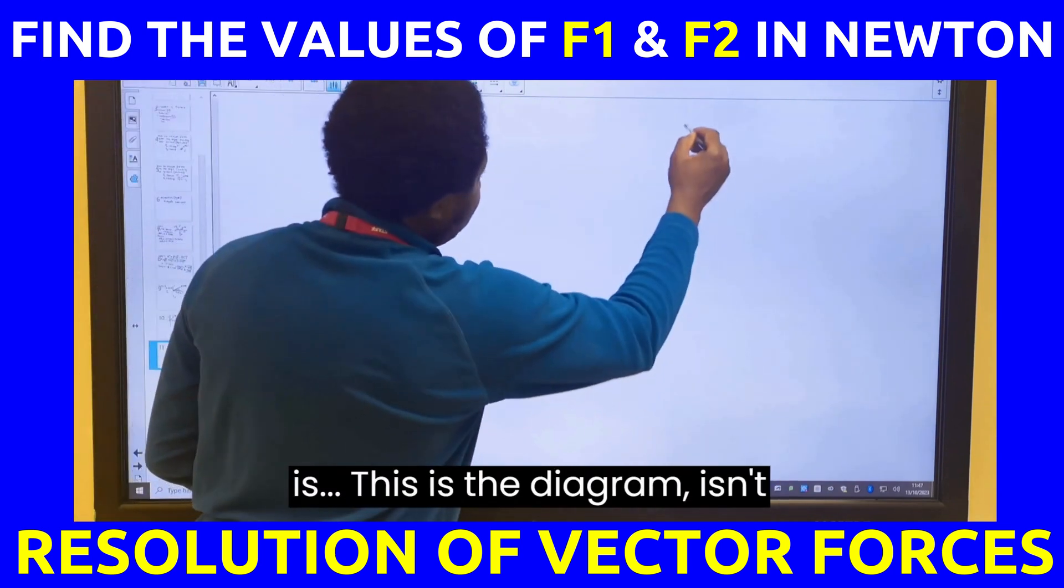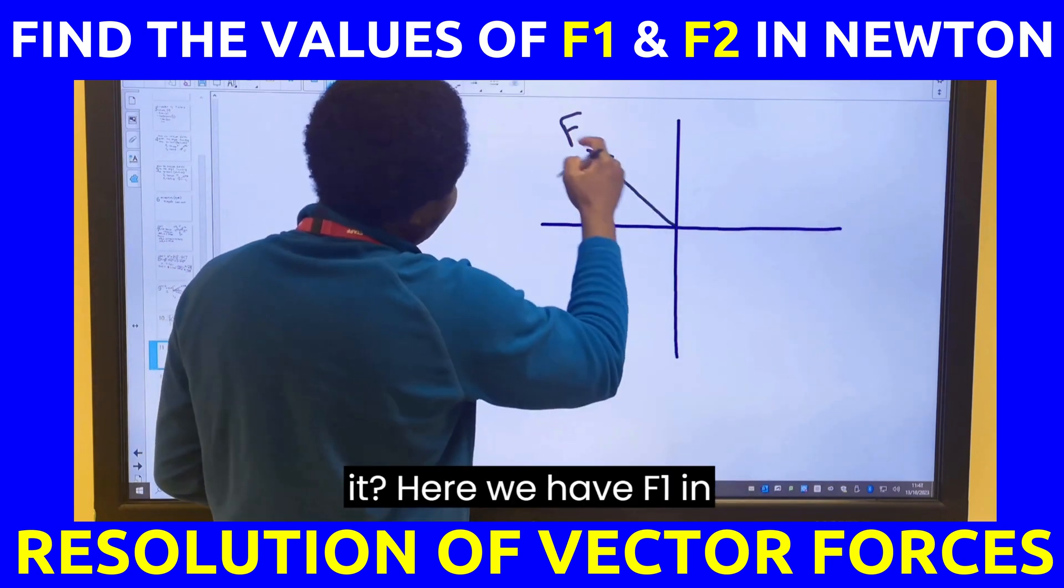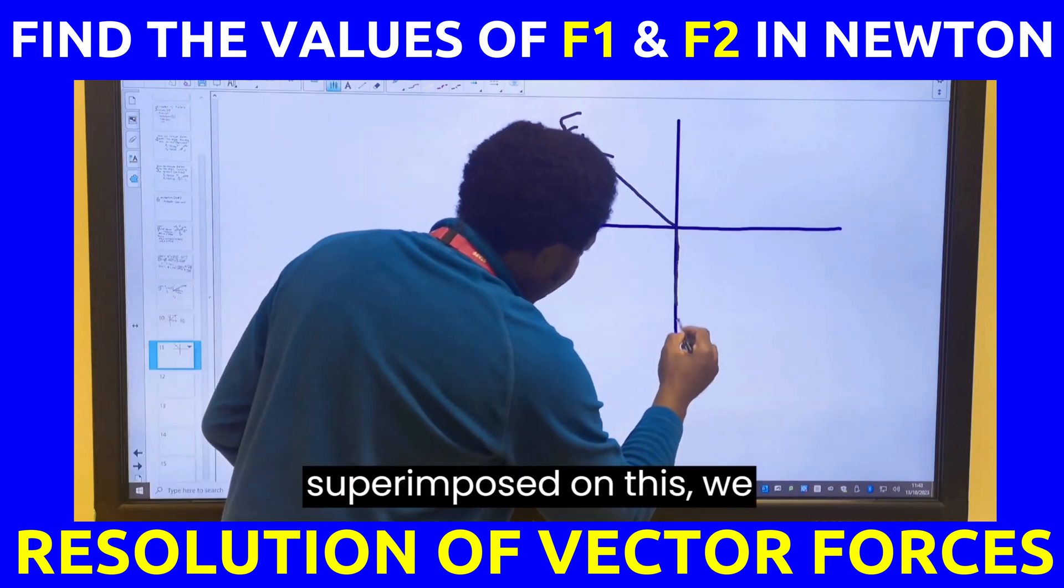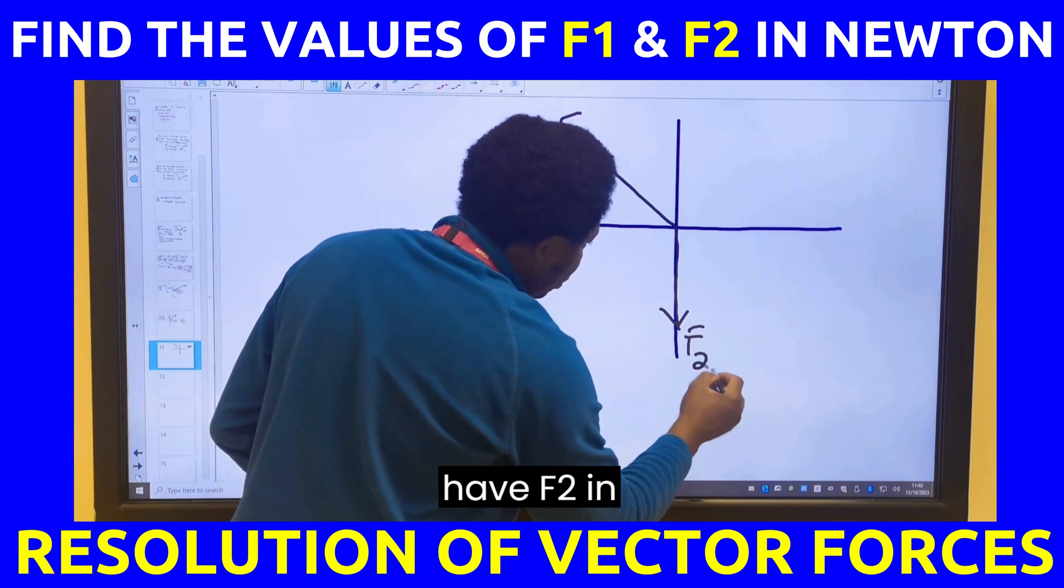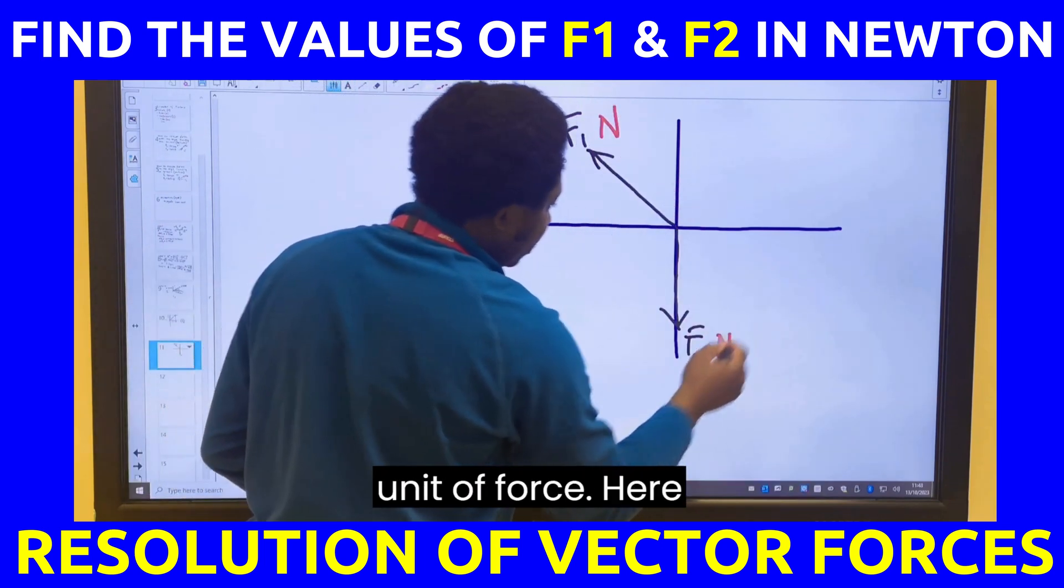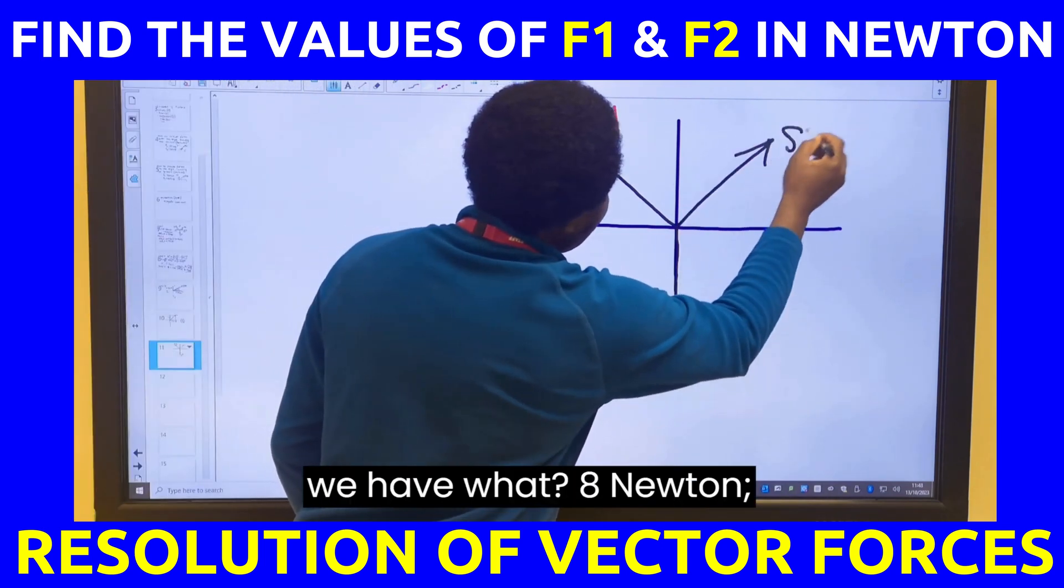The first step is, this is a diagram. Here we have F1 in Newton and superimposed on this, we have F2 in Newton. The Newton is simply the unit of force. Here we have 8 Newton.